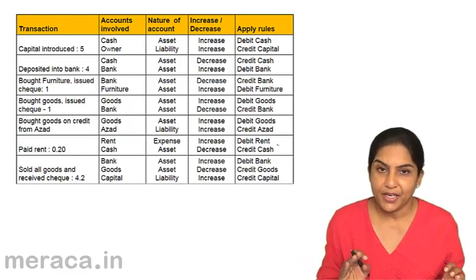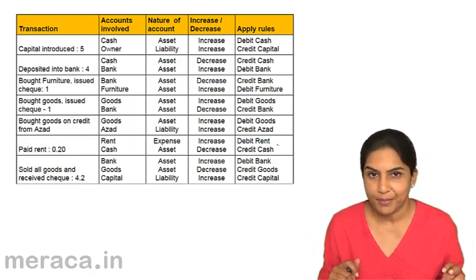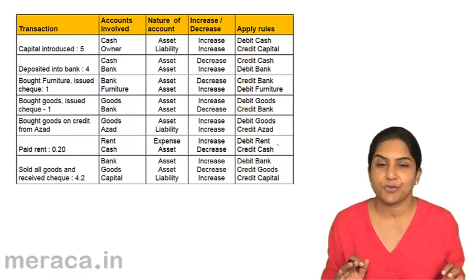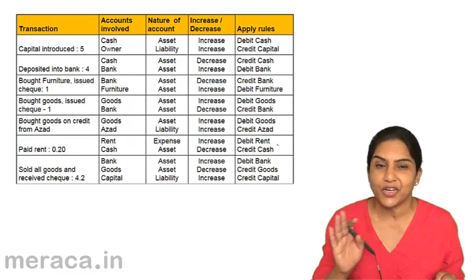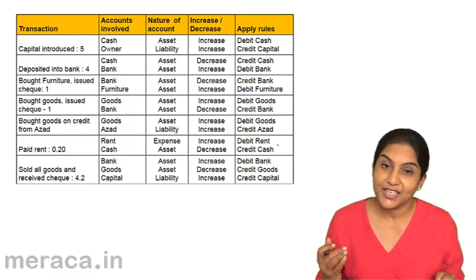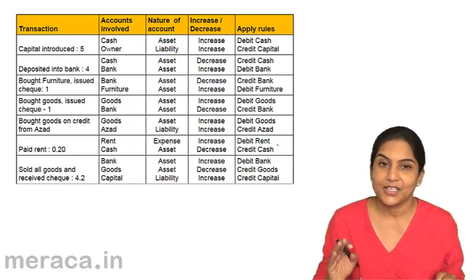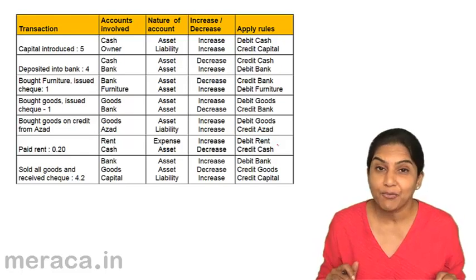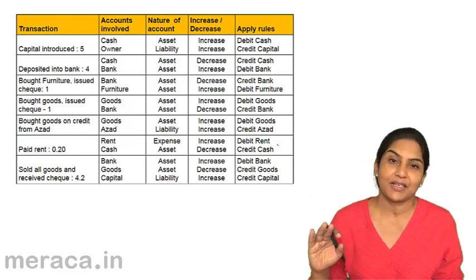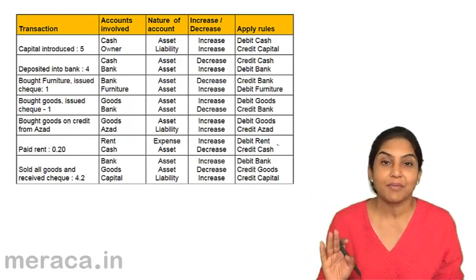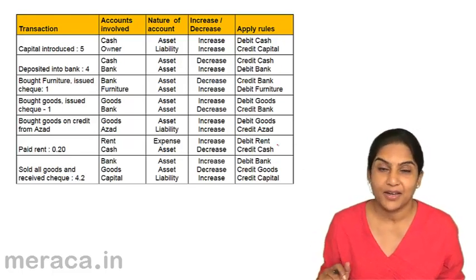If it is a liability, then increase in liability we will credit, and decrease in liability we will debit. Similarly, with respect to expense, the rule is the same as for an asset: if there is an increase in expense, we will debit; if there is a decrease in expense, we will credit. With respect to income, it is just the same as liability: if there is an increase in income, it is a credit.